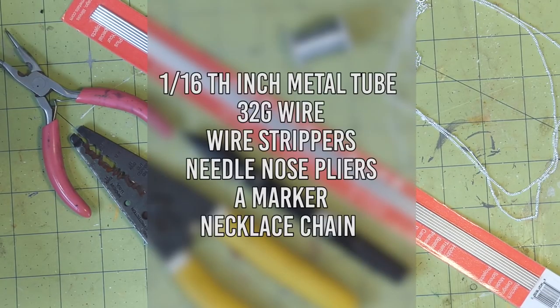You'll need 1/16th inch metal tube. I'm using aluminum, but I also made some with brass. 32 gauge wire, wire strippers, needle nose pliers, a marker, and necklace chain. The one I have is 30 inches and already has the clasp and everything on it, but if you just have straight-up chain, then you'll have to attach those to yours.